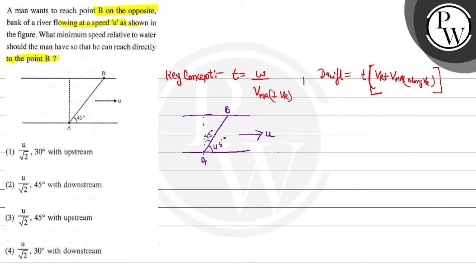What minimum speed relative to water should the man have so that he can reach directly to point B? Now, what is the time? Let's suppose that the width is W. If this is W at 45 degrees, then this is W. So W divided by what speed?